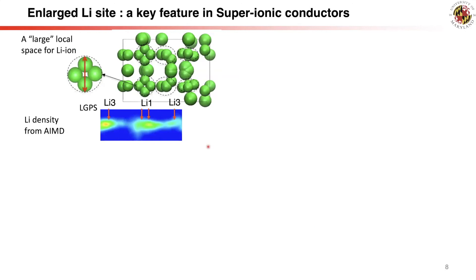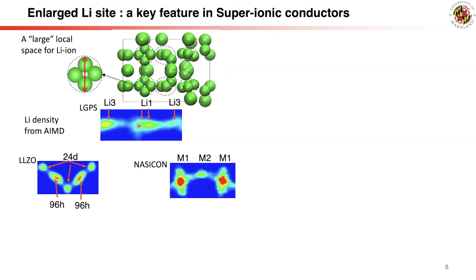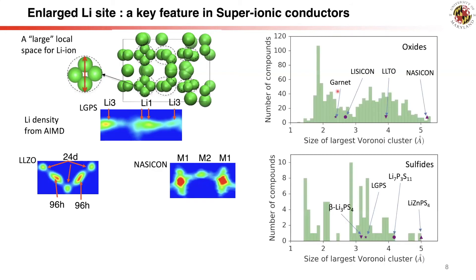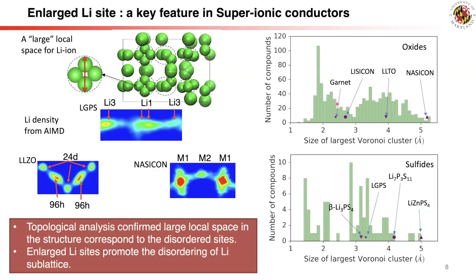In superionic conductors, we find a cluster of local space suitable for occupying lithium ions at multiple close positions, which corresponds to the enlarged lithium sites mentioned earlier. These agree with experimental sites and the lithium probability density from MD simulations. Our topological analysis confirms that superionic conductors have sites significantly larger than typical lithium diameters, and this locally large space in the crystal structure promotes geometric frustration and the disordering of the lithium sublattice.